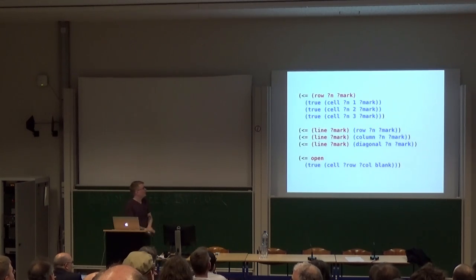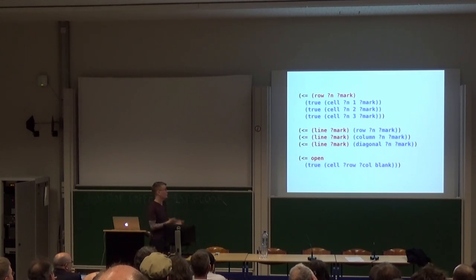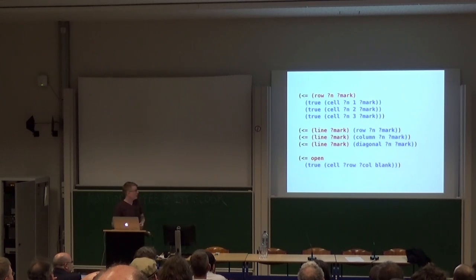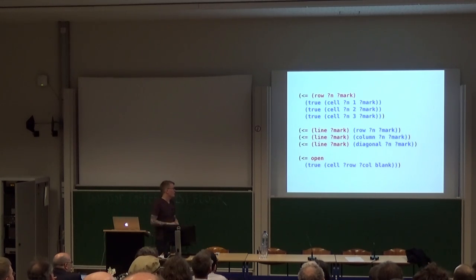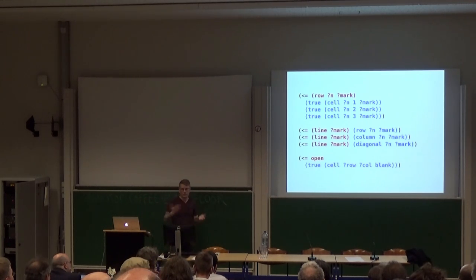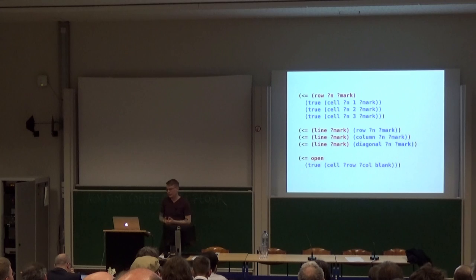Let's look at a couple of rules in tic-tac-toe. We have a rule to define what a row is — a row has a mark. So row 1 is x if cell 1,1 is x, cell 1,2 is x, and cell 1,3 is x. In GDL, logic variables are named with the question mark, which is nice because we like that in Lisp. You can also define column and diagonal similarly. Then we can define other rules that use these: we define line to say a person has a line if they have a row, a column, or a diagonal. We also need a predicate called open that is true if any cell is blank.